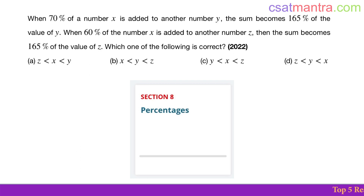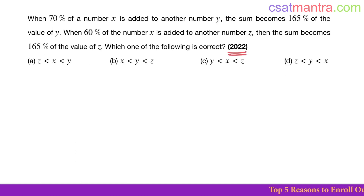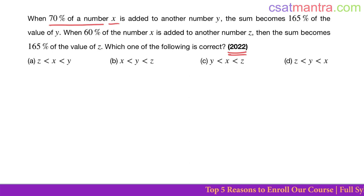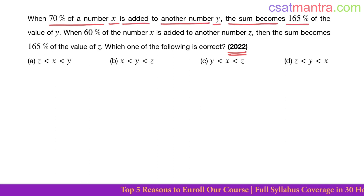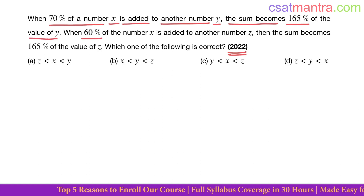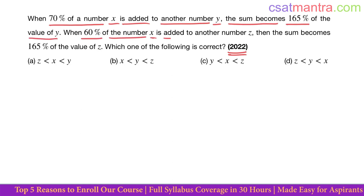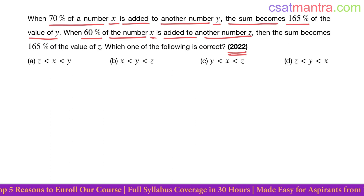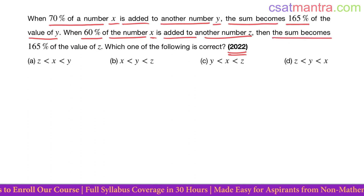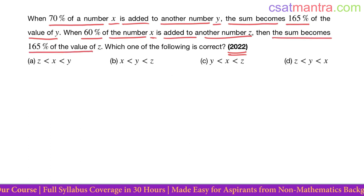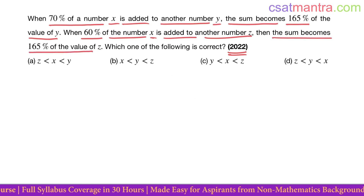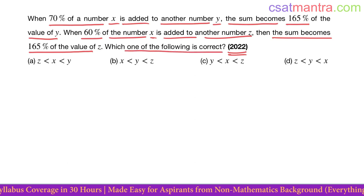This problem is asked in 2022, based on percentages. When 70% of a number x is added to another number y, the sum becomes 165% of the value of y. When 60% of the number x is added to another number z, the sum becomes 165% of the value of z. Which one of the following is correct?